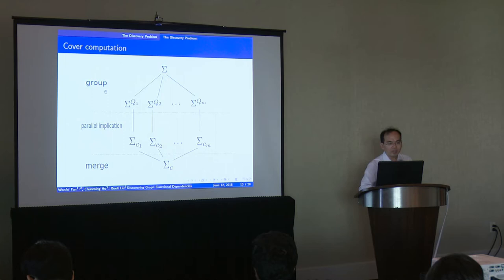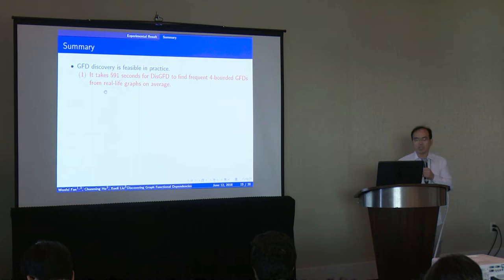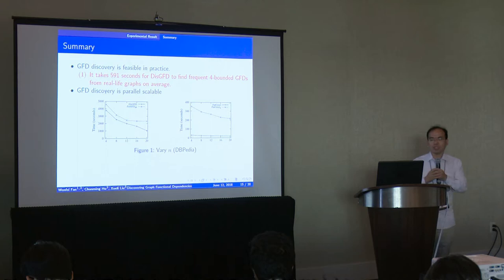Since time is limited, I'm going to the experiment results. GFD discovery is feasible in practice. It takes 591 seconds to find frequent four-bound GFD.